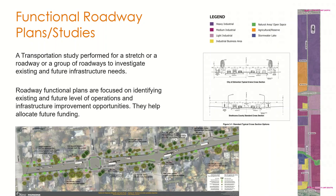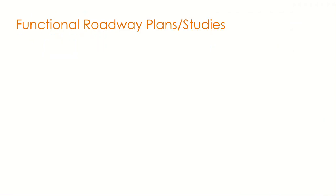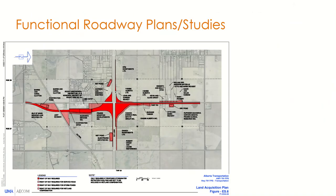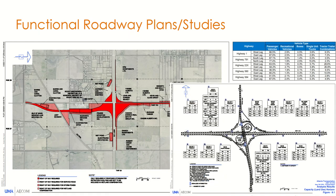Links to these examples are in the notes section of the slide for further reading. These studies do not necessarily just apply to roadways — they could also cover intersections and interchanges. An example from Rocky View County in Alberta is shown, where the traffic study looks at areas of improvement as well as intersection or interchange performance, both existing and in the future.